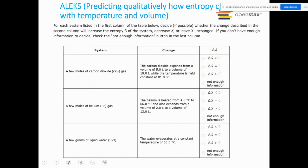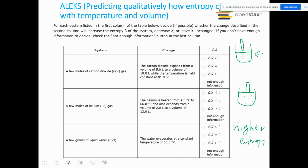Let's look at this LX problem predicting how entropy changes with temperature and volume. If I have a gas in an enclosed container with a piston, and I let the gas expand, the same number of particles now have greater volume. The system with greater volume has higher entropy because the gas can move much more freely, and whenever gas moves more freely, entropy is definitely higher.